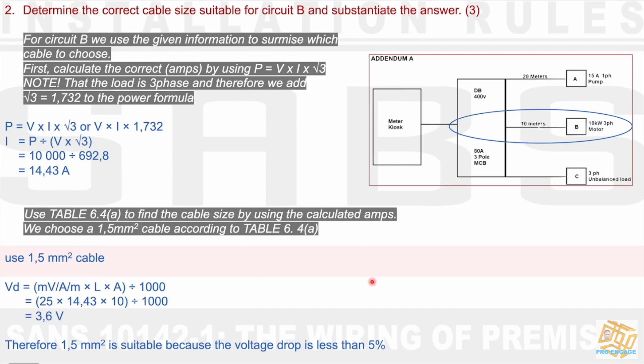Number two. For circuit B, we use the given information to surmise which cable to choose. First, calculate the correct amps by using P equals VI√3. Note that the load is in three-phase, and therefore we add √3 equals 1.732 to the power formula. P equals V times I times √3, or P can also equal to V times I times 1.732. Therefore, we manipulate the formula. We say I equals P divided by V times √3. We find the values 10,000 divided by 692.8, and we find 14.43 amps.